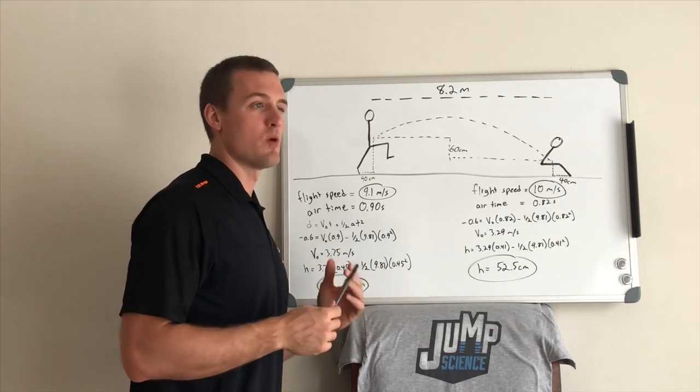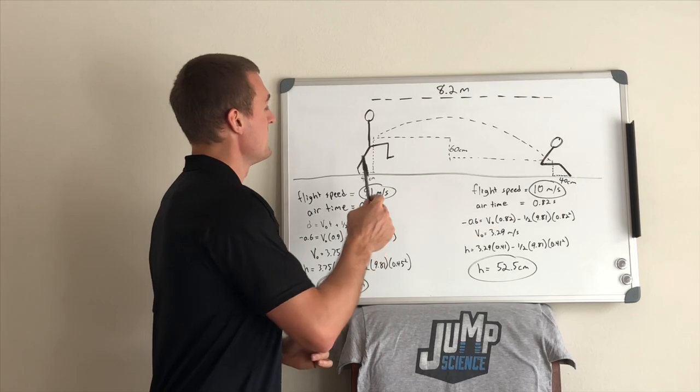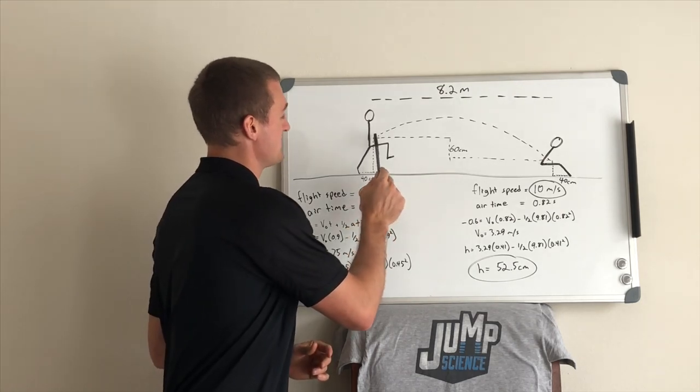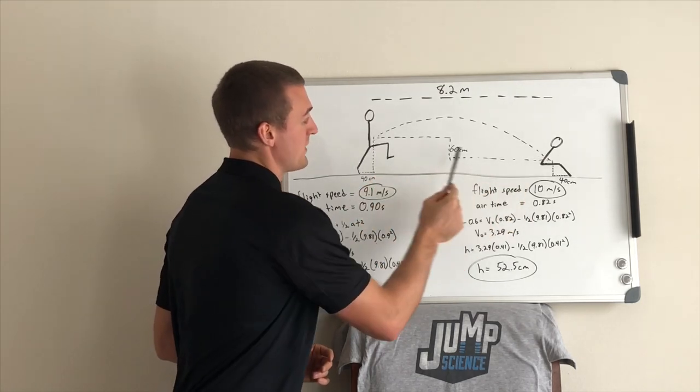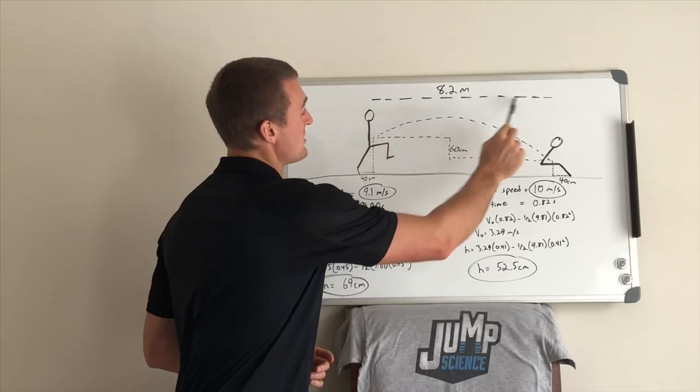Let's say we have a jumper who is 1.8 to 1.9 meters tall. The difference in height of the center of mass at takeoff and touchdown, we're estimating at 60 centimeters. Then we're estimating the takeoff distance to be 40 centimeters and the landing distance to be 40 centimeters. So we need the center of mass to travel 8.2 meters during flight.